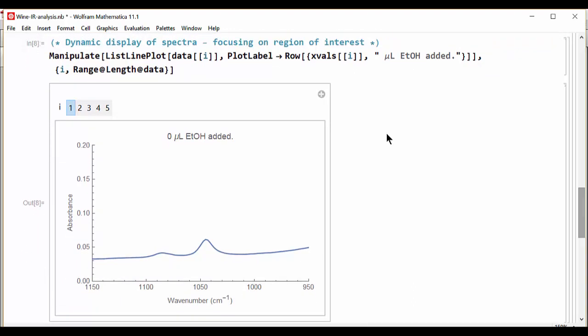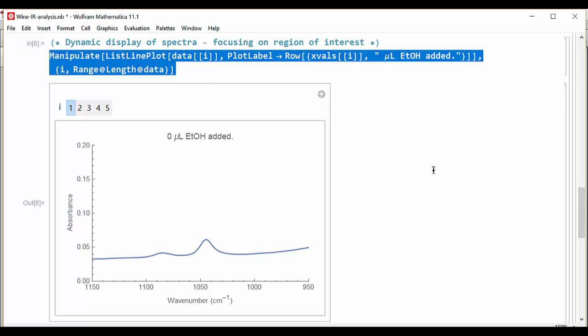And we'll start off with a dynamic plot using manipulate to visualize some of the data. So there are five spectra that were acquired, again starting with no ethanol added all the way up to 160 microliters.